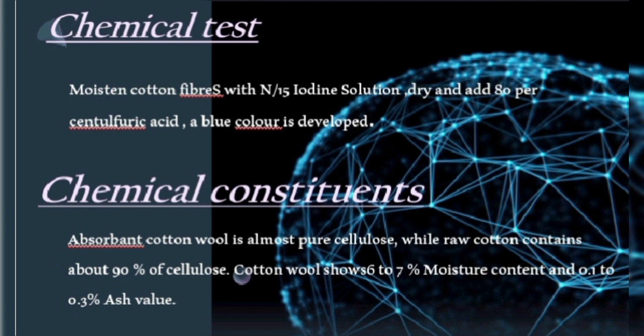Chemical test of cotton: moisten cotton fibers with 1 in 15 iodine solution, dry, and add concentrated sulfuric acid. A blue color is developed.